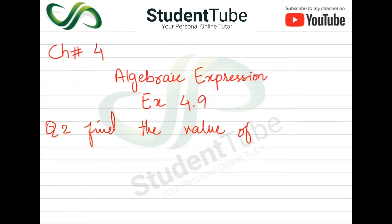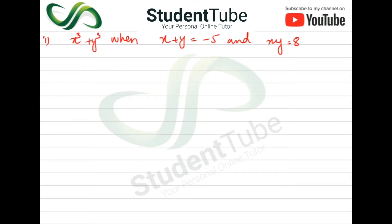Question number 2 is: Find the value of x³ + y³ when x + y = -5 and xy = 8. This question is different from the previous one, so let's solve it again.